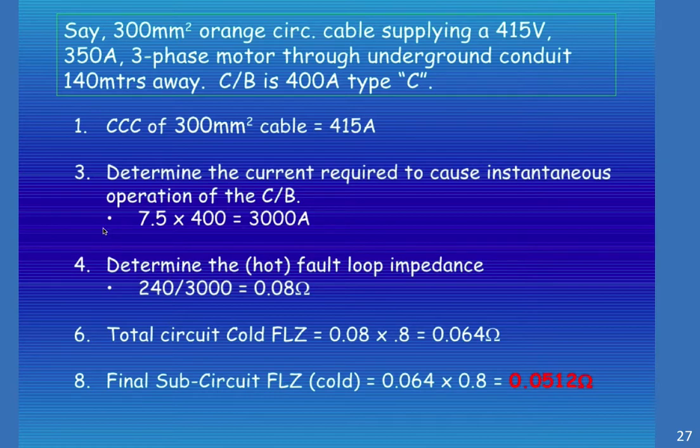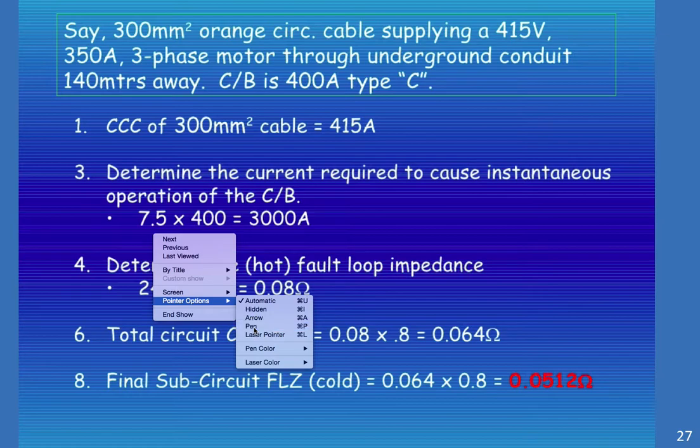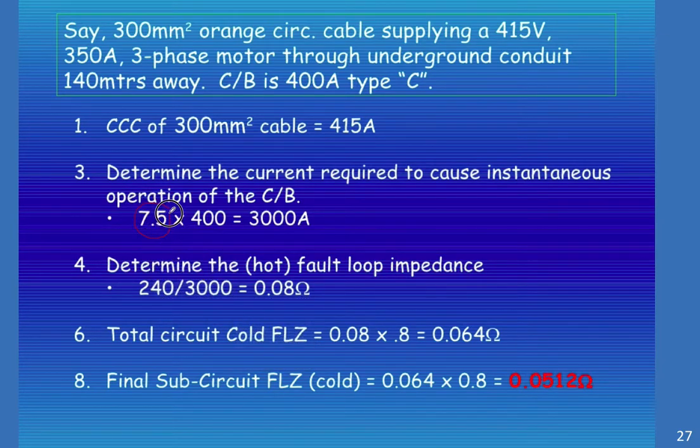We have to determine the current required to cause instantaneous operation of the circuit breaker. So being a Type C, we have to go 7.5 times. We know we've got 400 amps rounded up from 350. So 7.5 times 400 gives us 3000 amps to trip instantaneously.